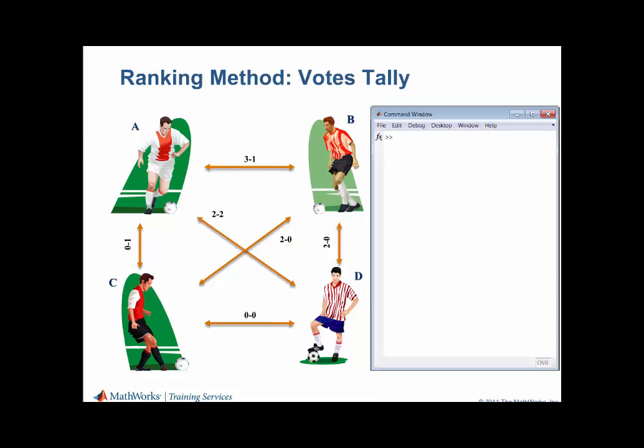We can also use MATLAB to collate the results in a matrix form. Here we create a matrix with the goal differences. Note that this matrix is anti-symmetric. We can then apply the function to calculate the votes for each team. The columns represent the votes cast by a given team. The rows represent the votes cast for a given team.